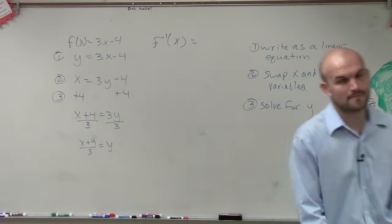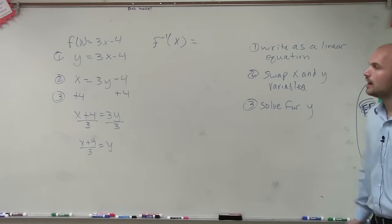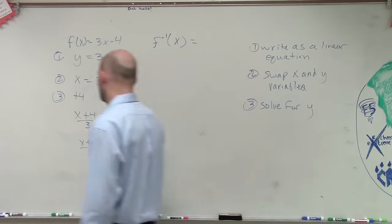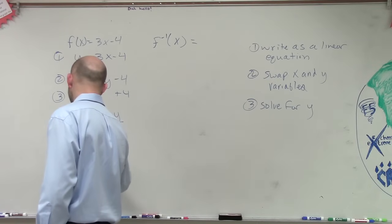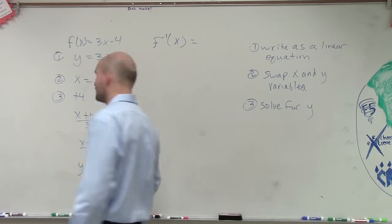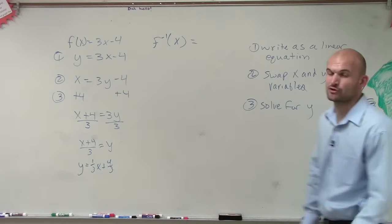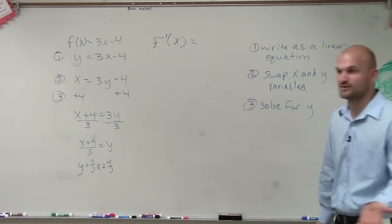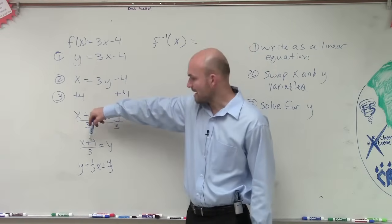So I've done now step number three. Can't you simplify that? We can rewrite this. We can write the y first and write it as 1 third x plus 4 thirds. If we're going to graph it, if you guys remember graphing it, remember I asked you to graph the inverse? This might be a little difficult to graph.